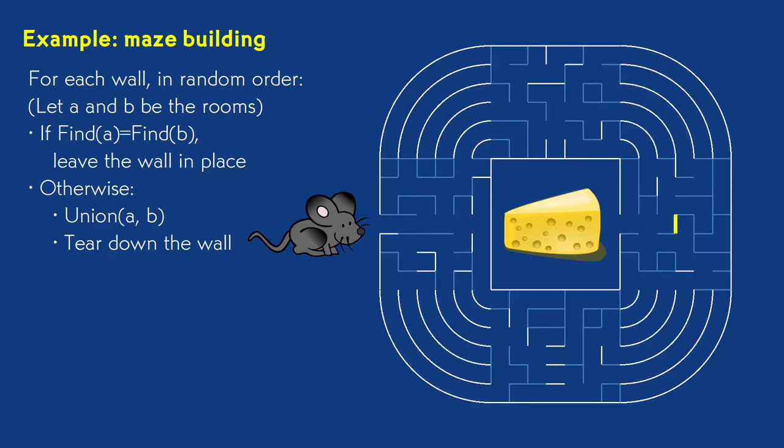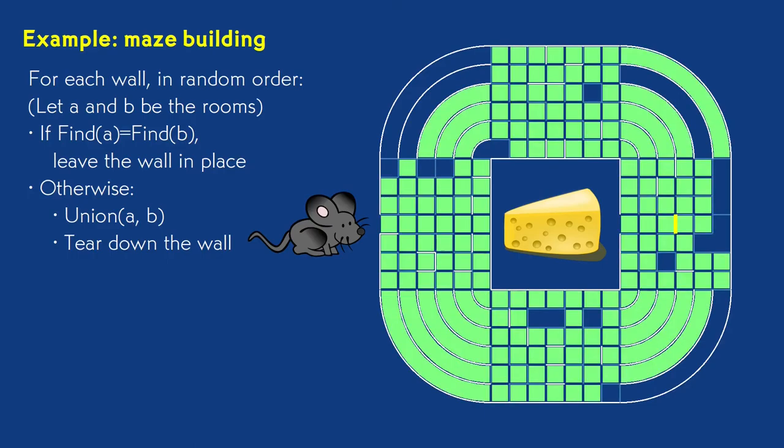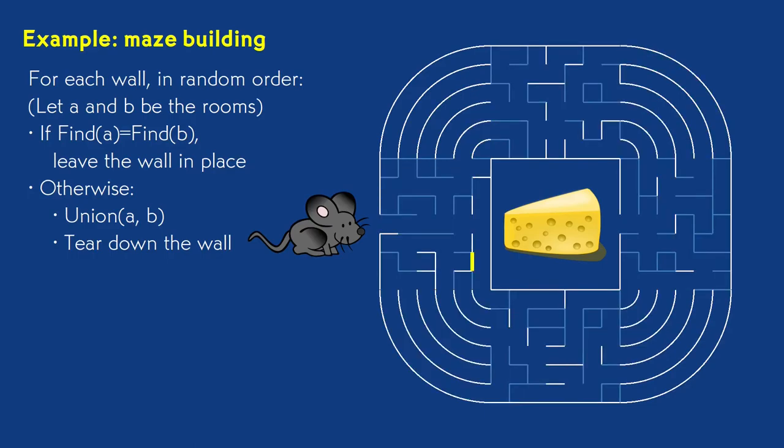At the end, we're just cleaning up. Virtually all remaining walls connect the large component to itself and are simply left standing. Once we've visited all the walls, we have a maze that has a unique solution because we know that all the rooms are connected and that we never created a cycle by connecting a room to itself.